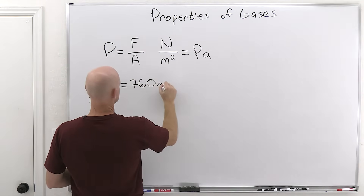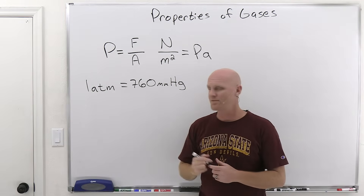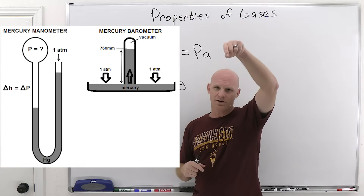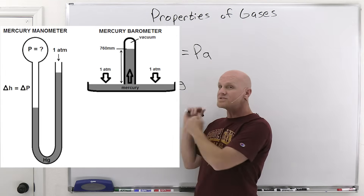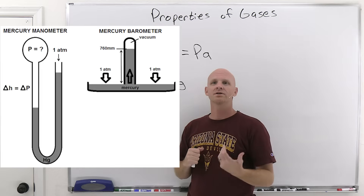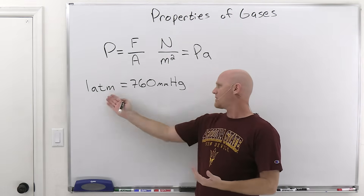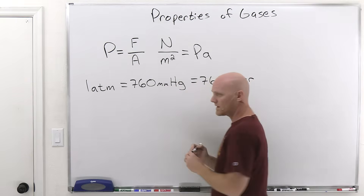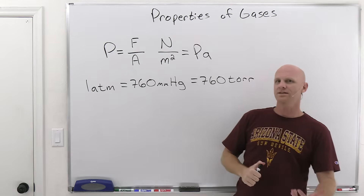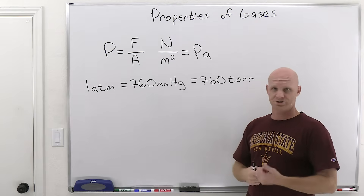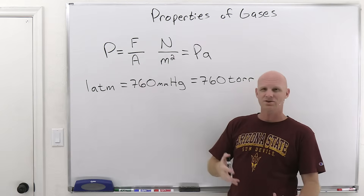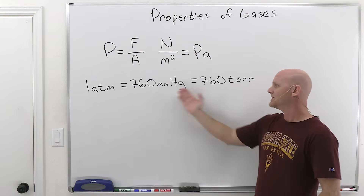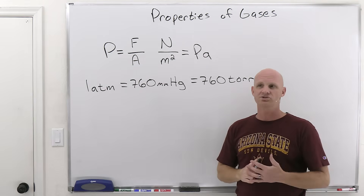Another unit is the millimeter of mercury. This comes from old manometers and barometers that used a column of mercury — one atmosphere of pressure would cause that mercury column to rise to a height of 760 millimeters. So one atmosphere equals 760 millimeters of mercury. We can also relate this to 760 torr. Torr was developed to be independent of gravitational field, so as long as you're at Earth's surface at sea level, millimeters of mercury and torr are the same thing, and that's what you'll assume in this class.